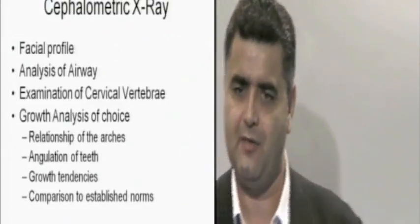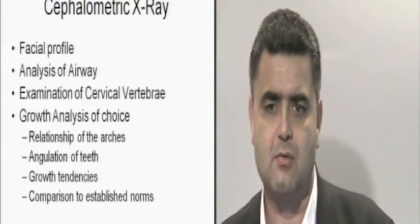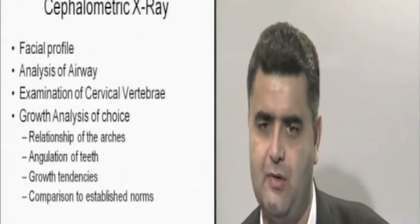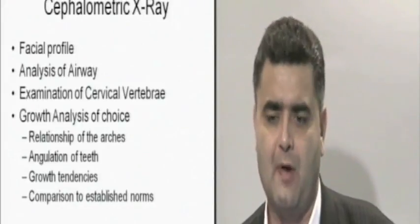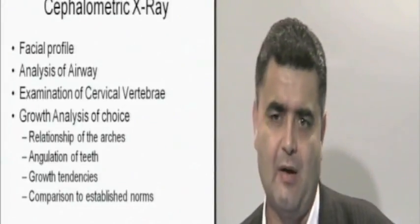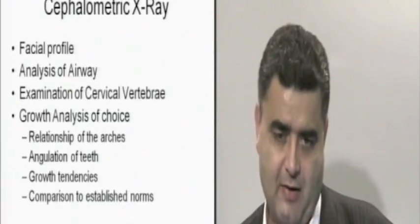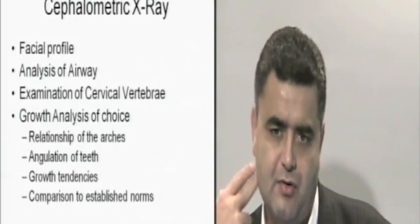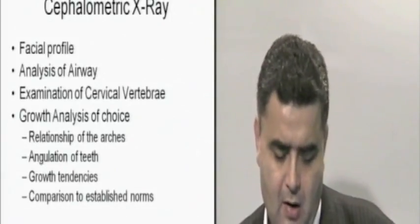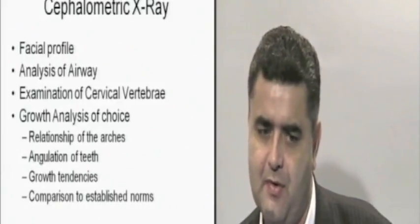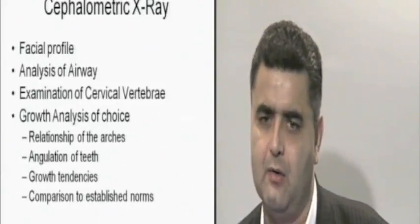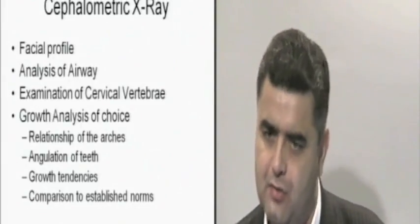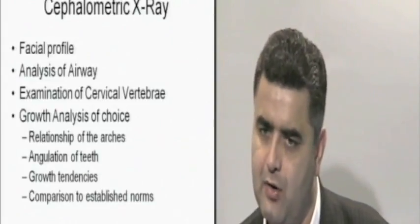Let's start with the cephalometric radiograph, called a lateral ceph. We look at it for a number of reasons. In the past we looked at it purely from the aspect of maxilla and mandible. Now we can look at it from the aspect of how much growth is remaining because of Frankie and Barchetti's research on cervical vertebrae. We also look at airway issues — it's not an ideal diagnosis, but you can get a two-dimensional view of tonsils and adenoids to see if they're contributing to blockage of the airway.